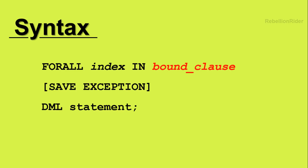The value of this index and the number of loop iterations are dependent on the bound clauses, which we specify right after writing the IN keyword. We will come back to these bound clauses in a minute. Next we have a reserved phrase, SAVE EXCEPTION. This option keeps the FORALL statement running even when a DML statement causes an exception. The use of SAVE EXCEPTION is optional but recommended.